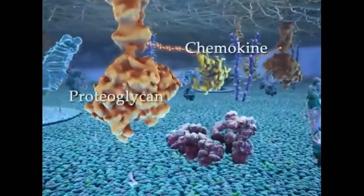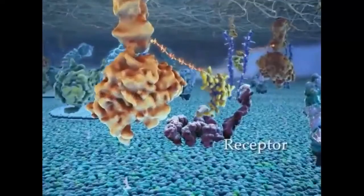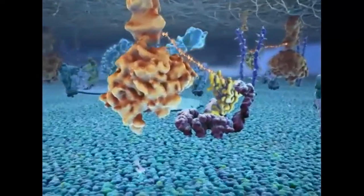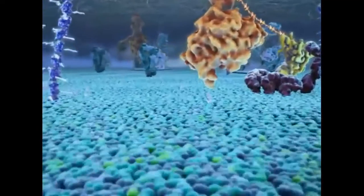secreted chemokines bound to heparin sulfate proteoglycan on endothelial cells are presented to leukocyte 7 transmembrane receptors. The binding stimulates leukocytes and triggers an intracellular cascade of signaling reactions.